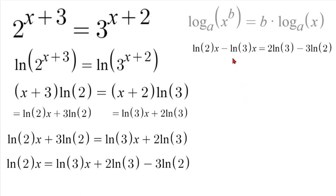Now what we can do is on this left side we can factor out our x value. So if we factored out our x we'd have (natural log of 2 minus natural log of 3) times our x is equal to the right side stayed the same.